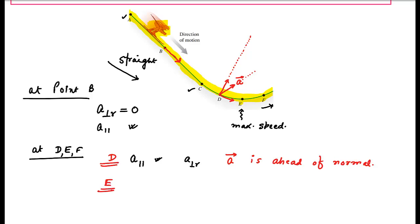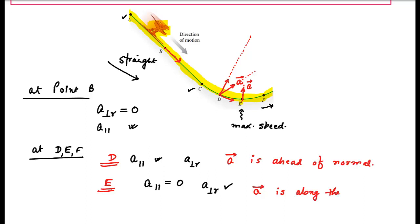What about point E? At point E the speed is maximum, so there is no change in speed. If there is no change in speed, the parallel component of acceleration equals zero, but the perpendicular component will still be there. So the acceleration will be along the normal direction. Because the parallel component is zero, we only have the perpendicular component, which is along the normal. So the acceleration vector at point E is along the normal.